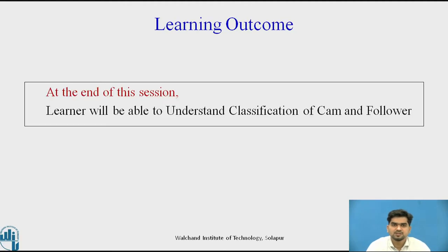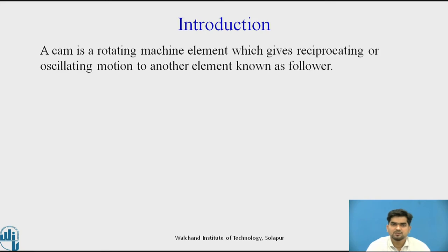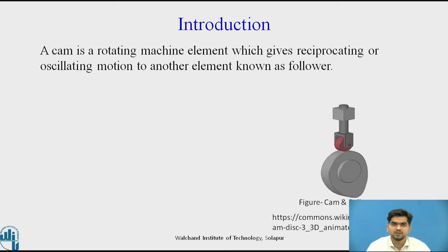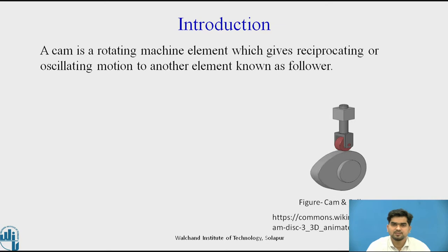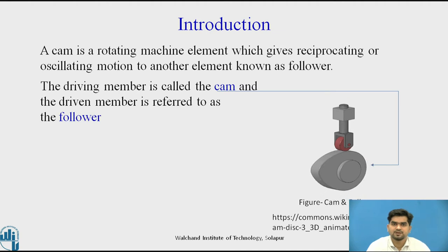The learning outcome of this session is that the learner will be able to understand the classification of Cam and Follower. The Cam is a rotating machine element which gives reciprocating or oscillating motion to another element known as Follower. The rotating member is called the Cam — it is the driver — and the element having reciprocating motion is called the Follower, also known as the driven member.